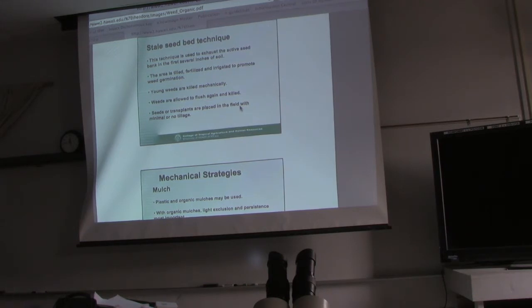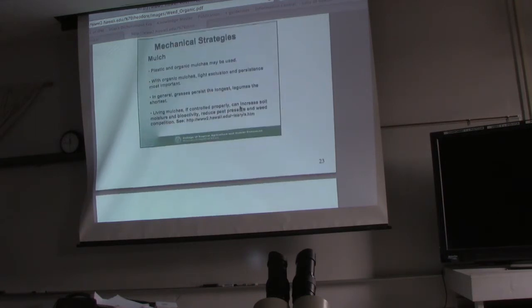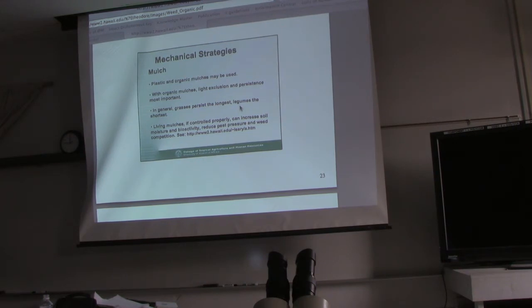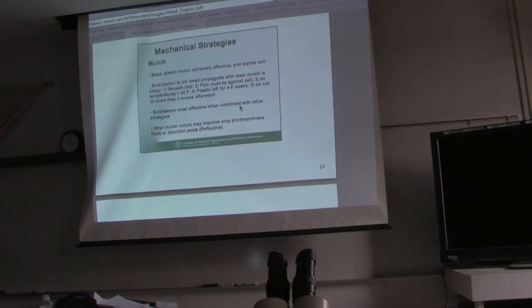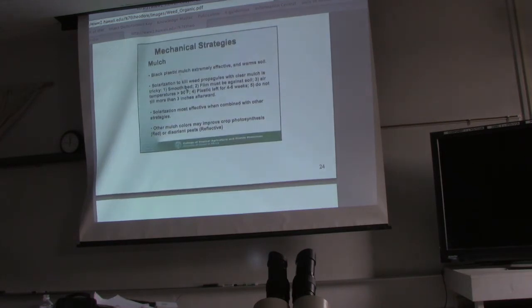We went through that. Mechanical techniques. Of course, mulching. There's going to be organic mulches and inorganic mulches - you got plastic and then you got plant material. In general, grasses persist the longest, legumes the shortest. Living mulches, if controlled properly, can increase soil moisture and bioactivity. So this is going to be cover crops essentially. Don't get too technical into mulch - we know what mulch is, right? We know why it works. That's a lot of mulch. You got black plastic. I want to talk about solarization.